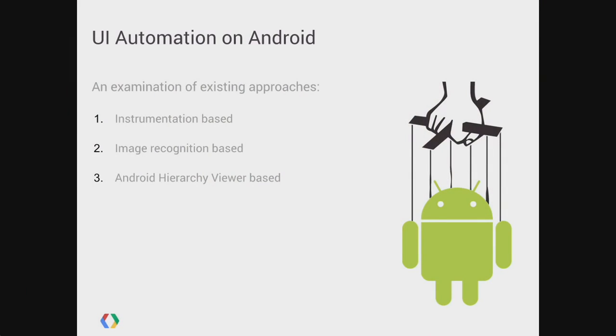We also did a survey on Android UI automation to look at the landscape and what solutions are already out there, to learn from their preexisting experiences. With that survey, we noticed three major trends: one is based on the instrumentation framework, the second is based on image recognition for UI inspection, and the third uses something called Android Hierarchy Viewer. I'll cover all three in the following slides.